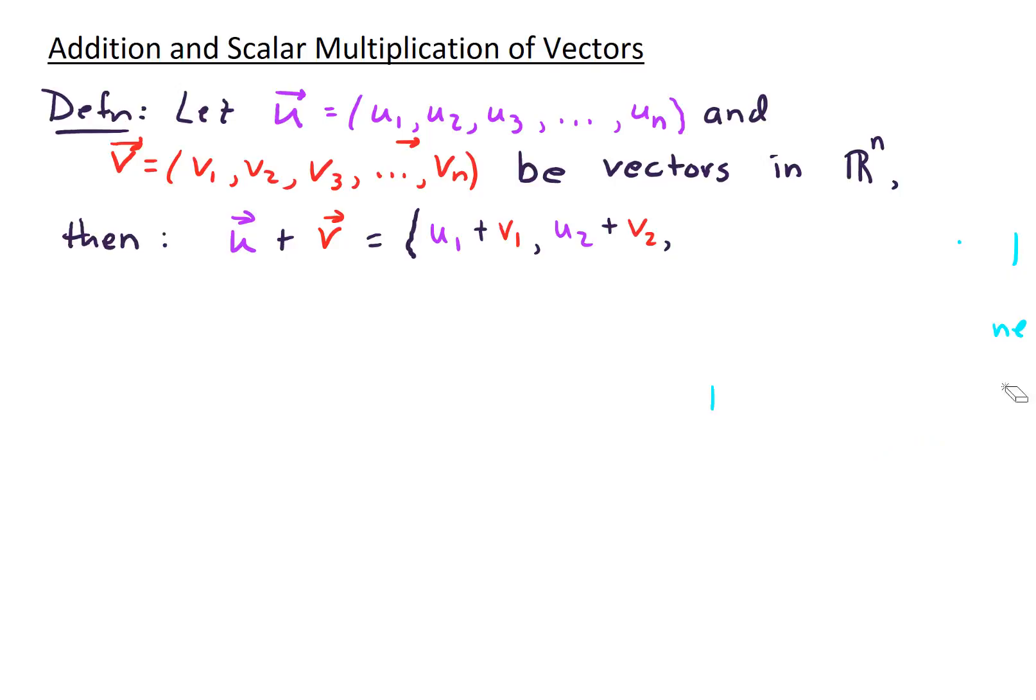We'll keep adding up component-wise until we get all the way up to our nth component. So that would be un plus vn. So addition is component-wise. We're just going to add up the components.